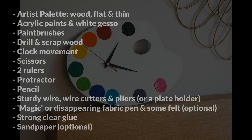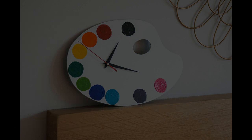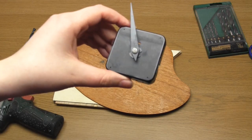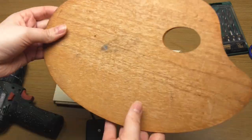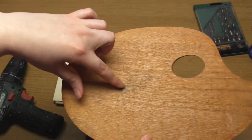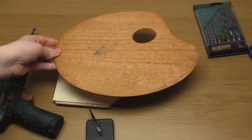Right, so step number one is to drill a hole in the artist palette. So you first need to decide where you would like the clock mechanism to be attached and then mark the preferred position of the spindle on the front of the palette.